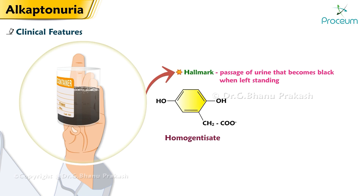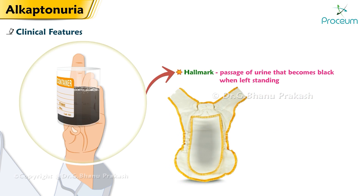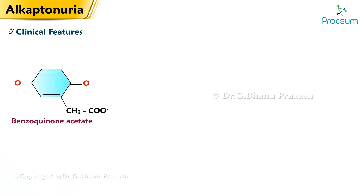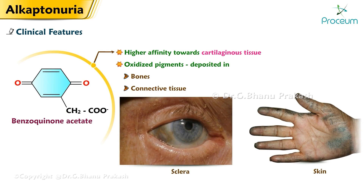The urine darkens owing to oxidation of homogentisate to benzoquinone acetate, which is polymerized to form black alkapton bodies. Alkaptonuria patients' urine can stain nappies dark, which become darker on washing with alkaline soaps and detergents. Benzoquinone acetate has a higher affinity towards cartilaginous tissue and hence accumulates over cartilaginous tissues.